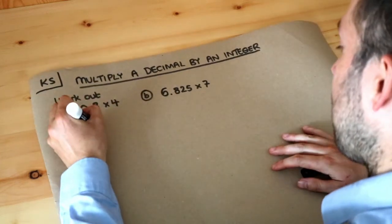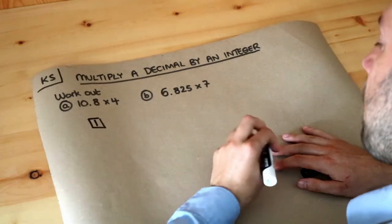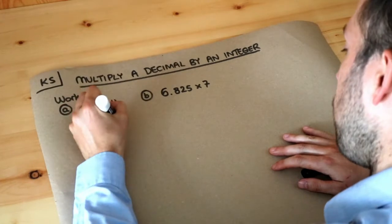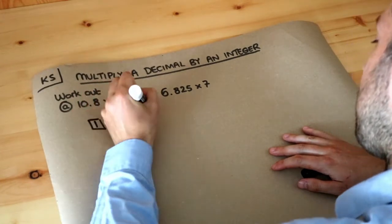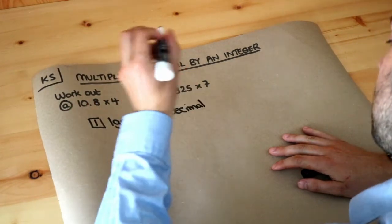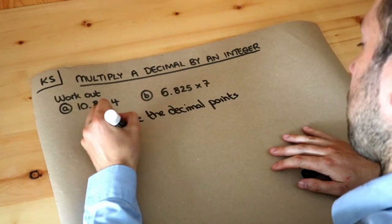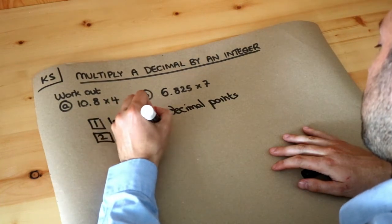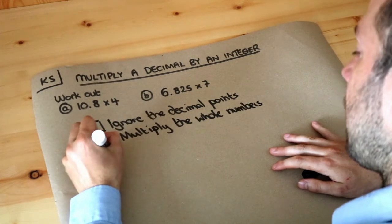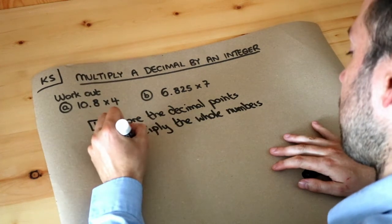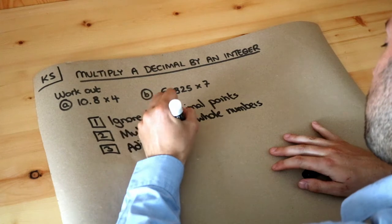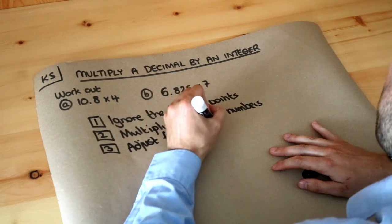Now I'm going to write out the steps and then we're going to carry them out. Step one is to ignore the decimal points - we'll un-ignore them later. Step two is multiply the numbers as if they were whole numbers. And step three is adjust for the movement in decimal points. I'll explain what that means.